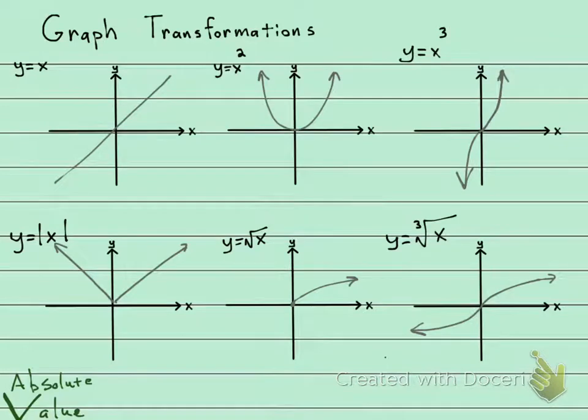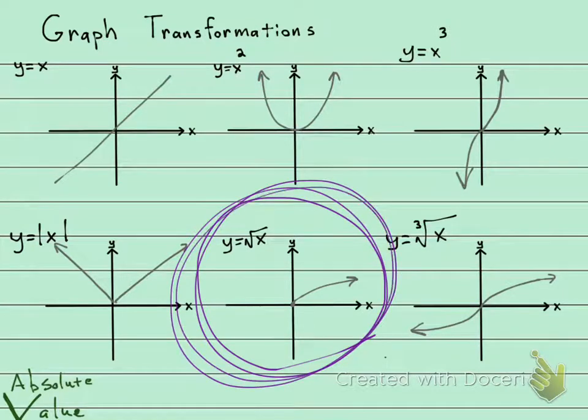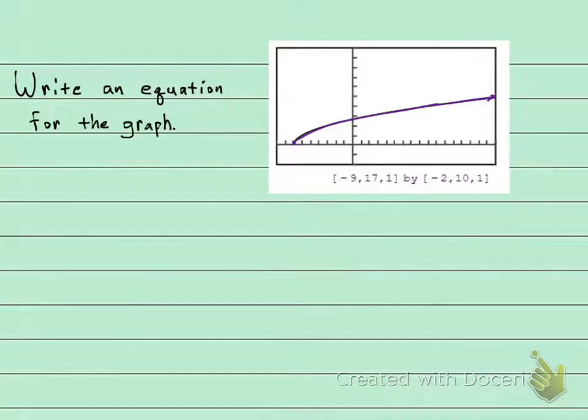We look at our basic shapes and you can see that this looks like y equals the square root of x, which I call a zinger. So I know it's going to be based on y equals the square root of x.